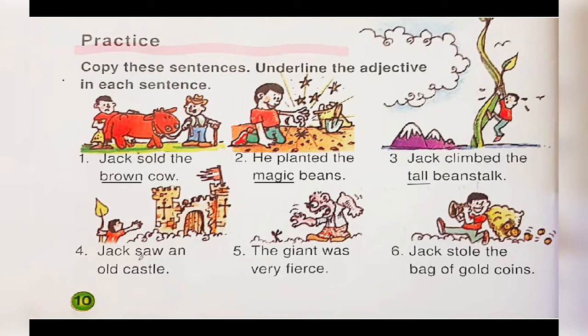Number four: 'Jack saw an old castle.' What kind of castle? An old castle. The word 'old' describes the castle, so 'old' is an adjective.